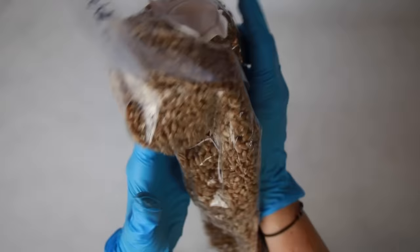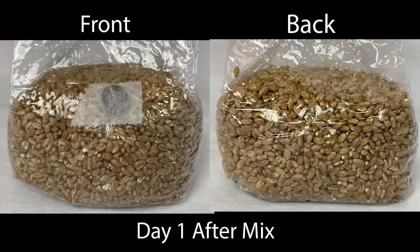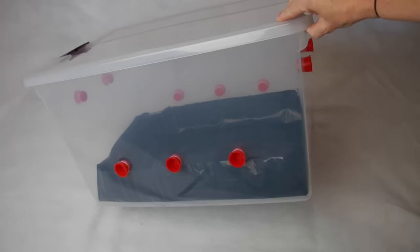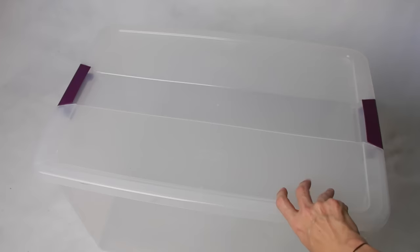After the bag is about 10 to 30% colonized, break up and mix the mycelium throughout the bag, trying to distribute the mycelium evenly. Then wait 10 to 15 days until the spawn bag is fully colonized.